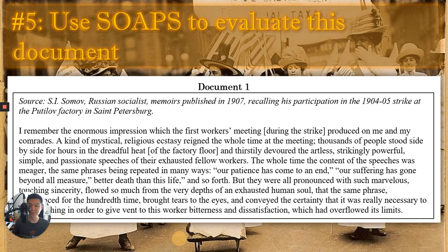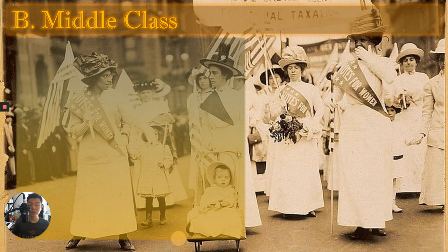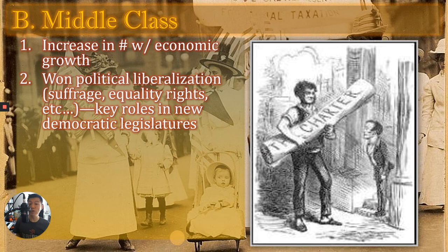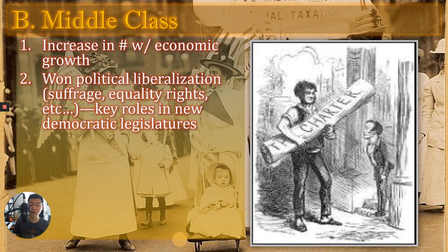Welcome back. We want to finish off this lecture by examining some of the other class groups in this time period—particularly the rise of the middle class. With the growth of the Industrial Revolution, whether they are doctors, bureaucrats, investors, teachers, professors, and others, there is a growing middle class. This group won political liberalization for themselves—greater equality in access to government, legislatures, rights such as suffrage and equality rights—and they played a key role in passing reformed laws in the late 19th and early 20th centuries.